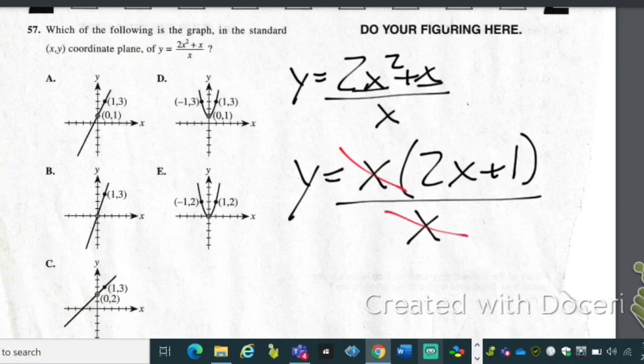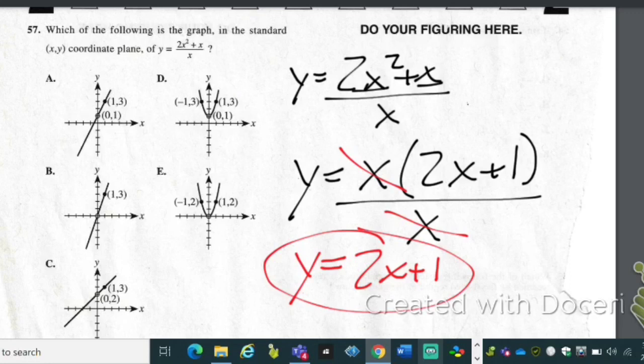This leaves you with y equals 2x plus 1. It's a regular line, so the parabolas can go away.